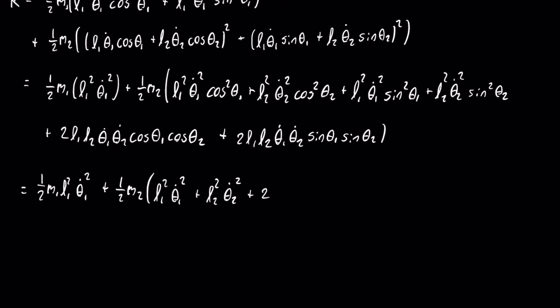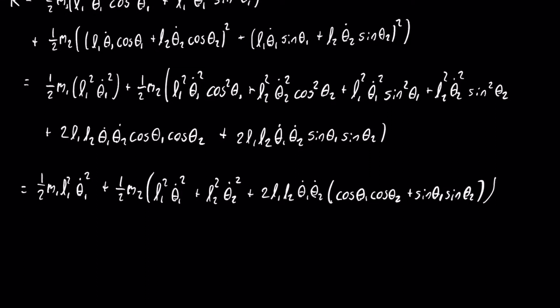You can then factor out 2L1 L2 theta 1 dot theta 2 dot out of the fifth and sixth terms, and then you are left with cosine of theta 1 cosine theta 2 plus sine theta 1 times sine of theta 2, which, if you remember, is one of our identities. Rewriting everything once again, and simplifying anything that can be simplified, we arrive at this.